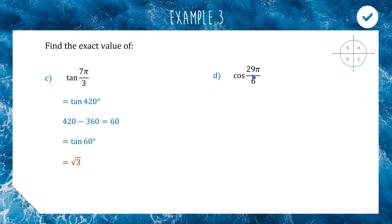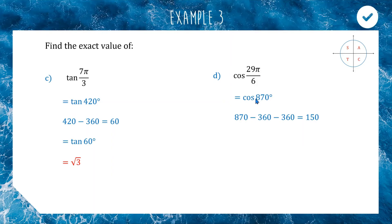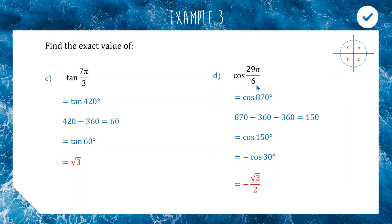For cos(29π/6): π/6 is 30 degrees, times 29 gives 870 degrees. Since 870 is bigger than 720, we subtract 360 twice: 870 − 360 − 360 = 150. Cos(150) puts us in quadrant 2, 30 degrees back from 180. In quadrant 2, cosine is negative, so cos(150) = −cos(30) = −√3/2.